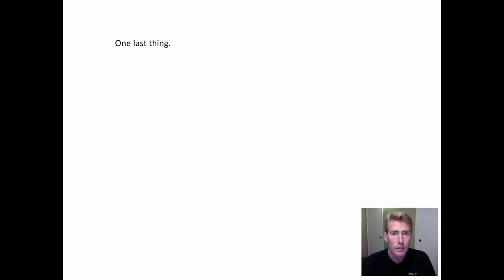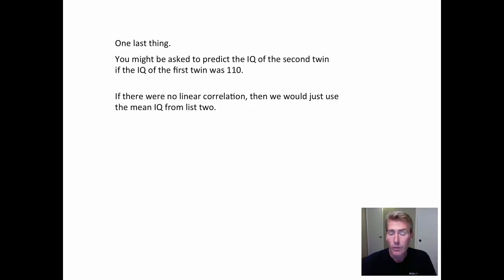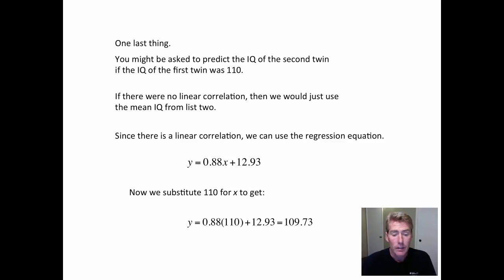There's one last thing. We haven't really used the regression equation. So the keyword that they would use is predict. So suppose you knew the IQ of the first twin was 110. Predict the IQ of the second twin. Well, pretend for a moment that there was no linear correlation, that R turned out to be 0.01 or something like that. Well, then you can't use the regression equation because there is no correlation. So instead, what you would do is just go to list two, find the average, and use that. But in this example, we found there is a positive linear correlation. So we're allowed to use the regression equation. Then all you have to do is substitute the 110 for x, get out a calculator and find out the answer is 109.73.